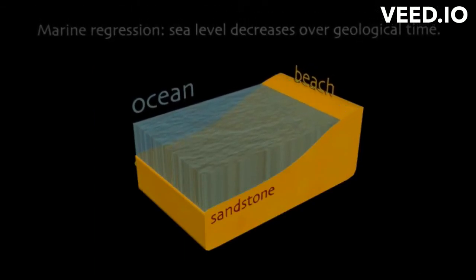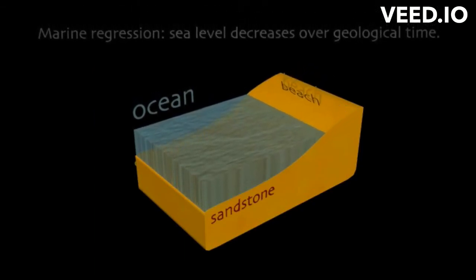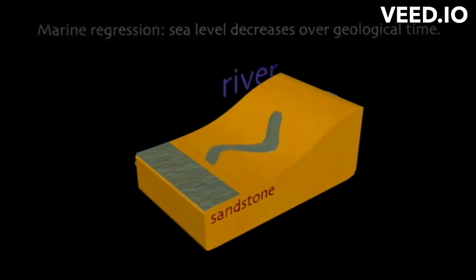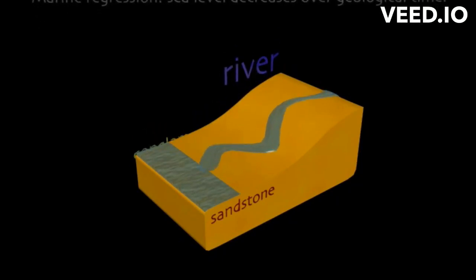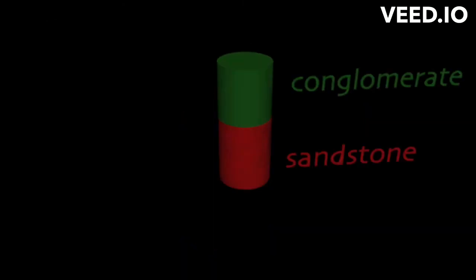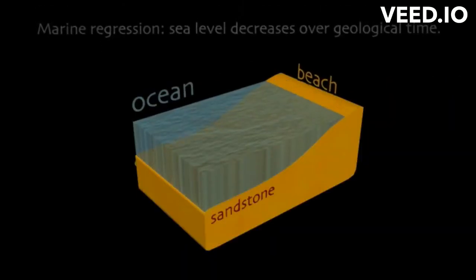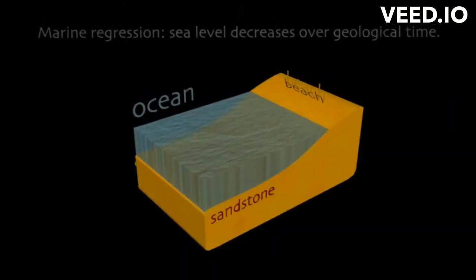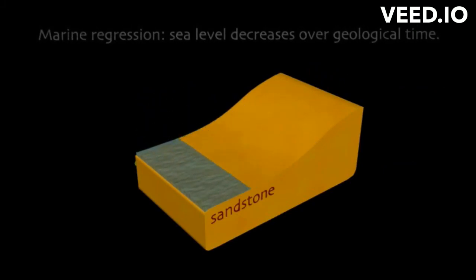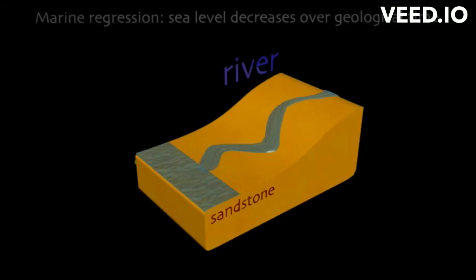Marine regression is a geologic event in which areas of the seafloor are exposed above sea level, thus changing the coastline. This happens when a shoreline moves away from the land onto the ocean due to a drop in sea level. Regressions can be caused by an actual drop in sea level due to glaciation, or by a rise in the Earth's crust caused by tectonic movements — that is, tectonic uplifting.